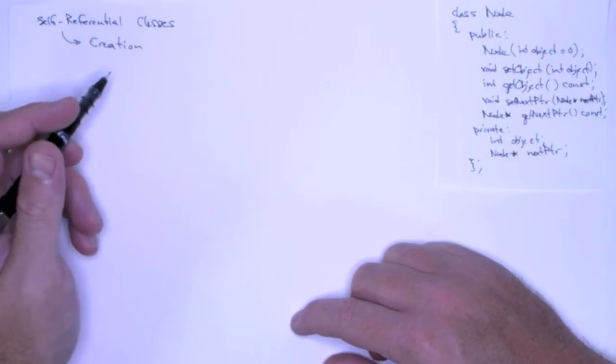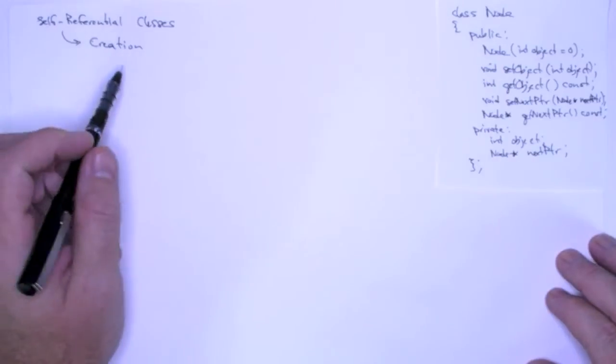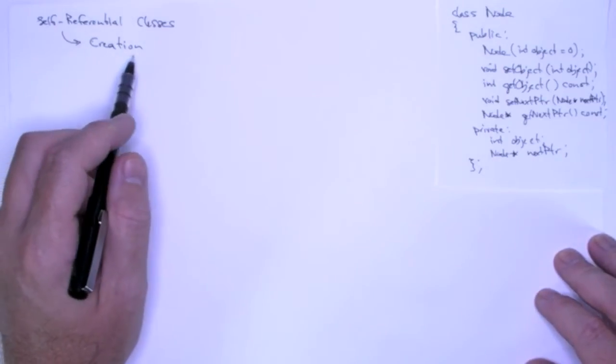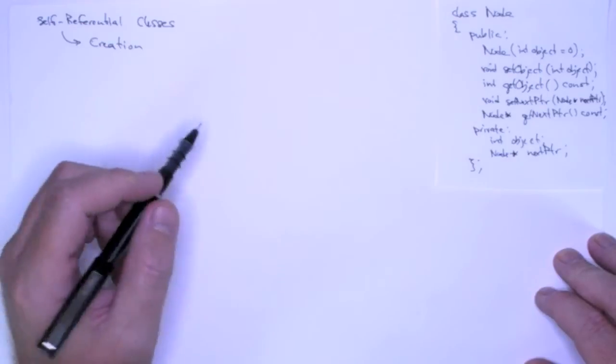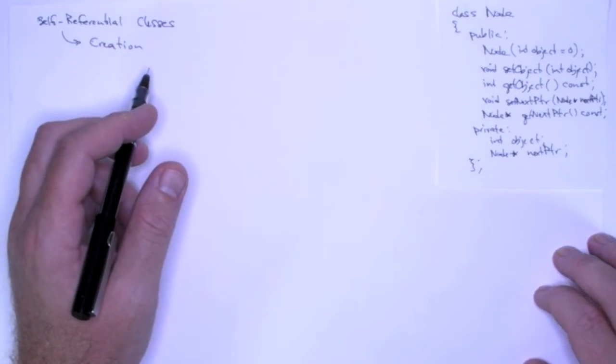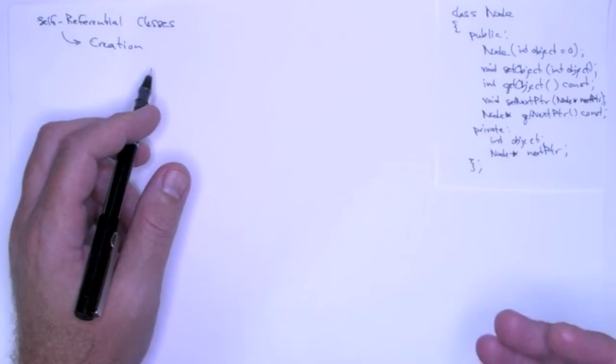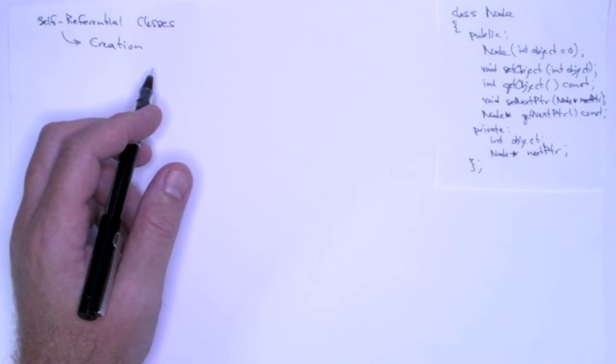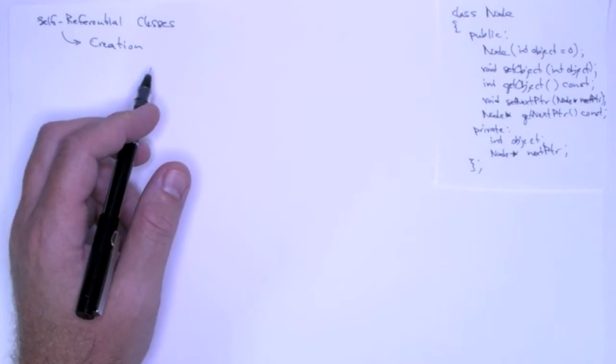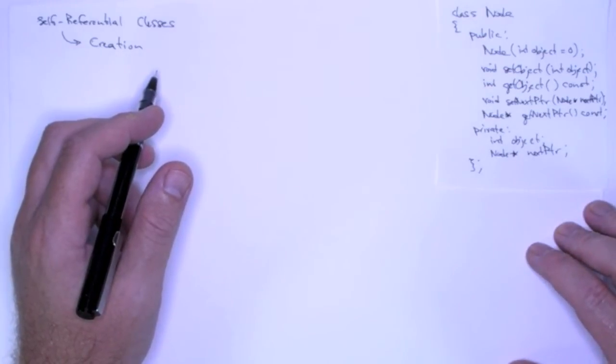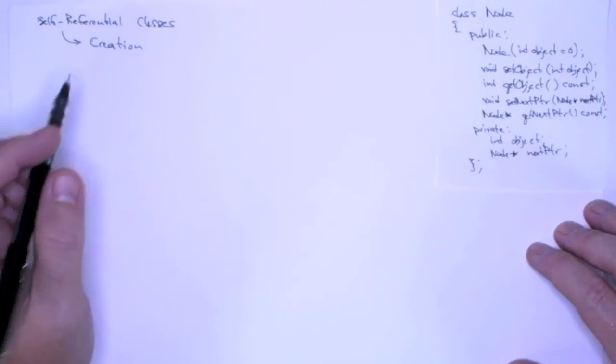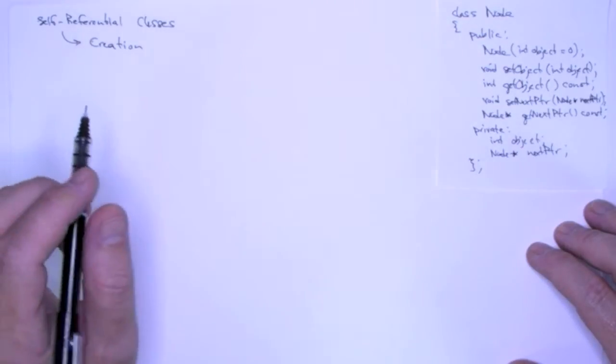So what we're going to do in this video lecture is we're going to look at creation, we'll also look at traversal, and then we'll look at destruction. Destruction was another issue with the previous lecture, because anything that we created with new, we did not delete it. So we're going to take care of that. We're also going to look at more general ways of creation and traversal, and then finally destruction.